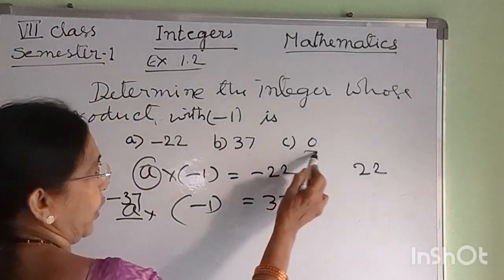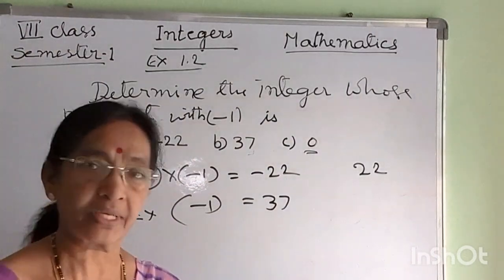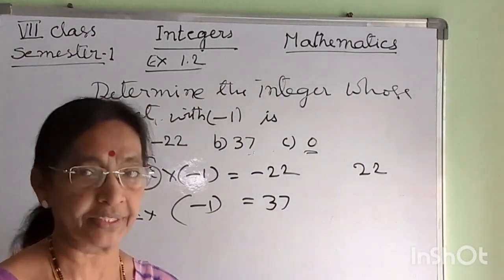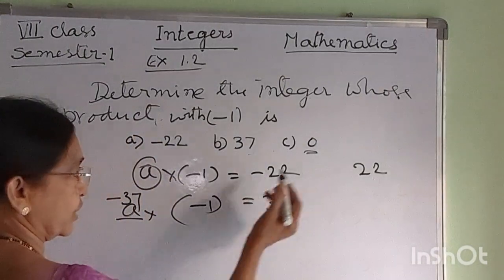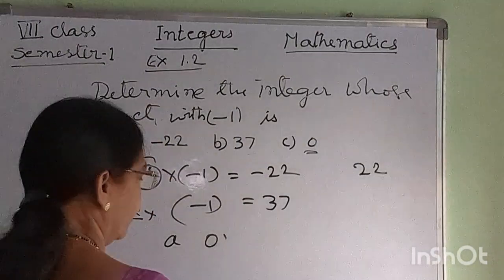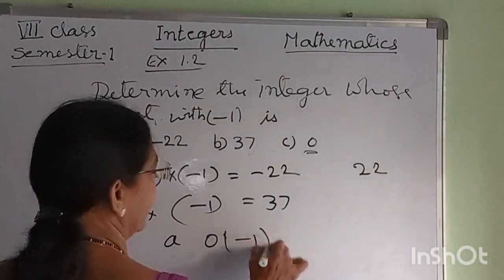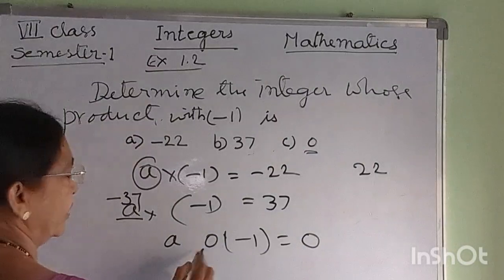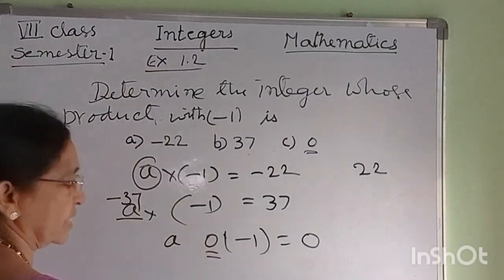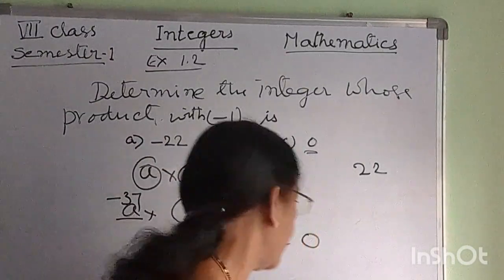Next, 0: the product is 0. Zero is also an integer. When 0 is multiplied by minus 1, we get 0. Therefore the integer is 0.